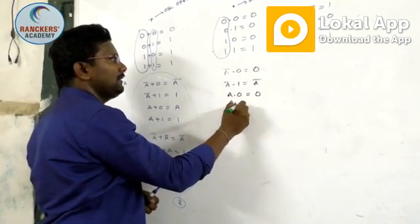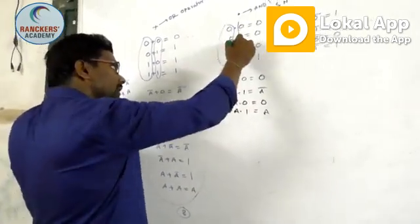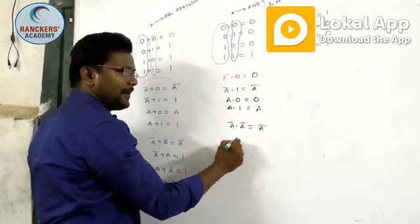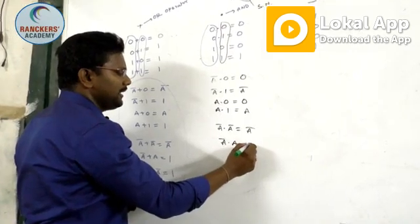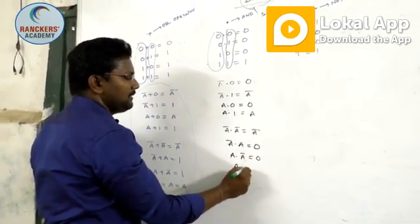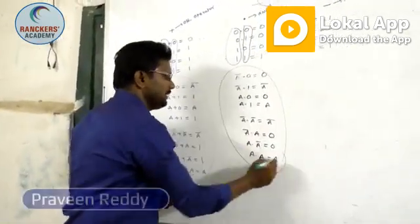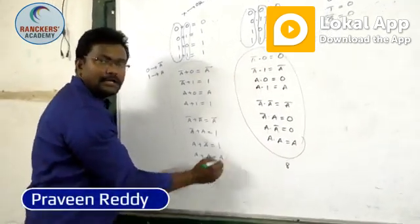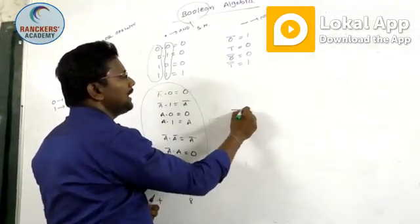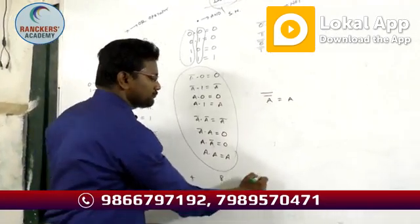Similarly for the AND (dot) operator: A dot zero is zero, A dot one is equal to A. A bar dot A bar is equal to A bar. A bar dot A is equal to zero. A dot A bar is equal to zero. A dot A is equal to A. For the NOT operator: A bar whole bar is equal to A — double negation returns A.